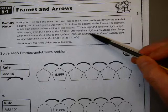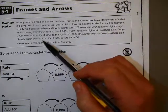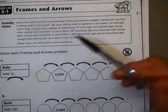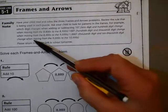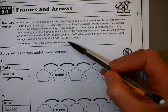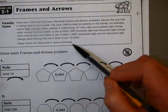One hundred, hundred's digit, and thousand's digit change when moving from the 8,000s to the 9,000s. One thousand, thousand's digit, and ten thousand's digit change when moving from the 9,000s to the 10,000s. Please return this Homelink to school tomorrow.